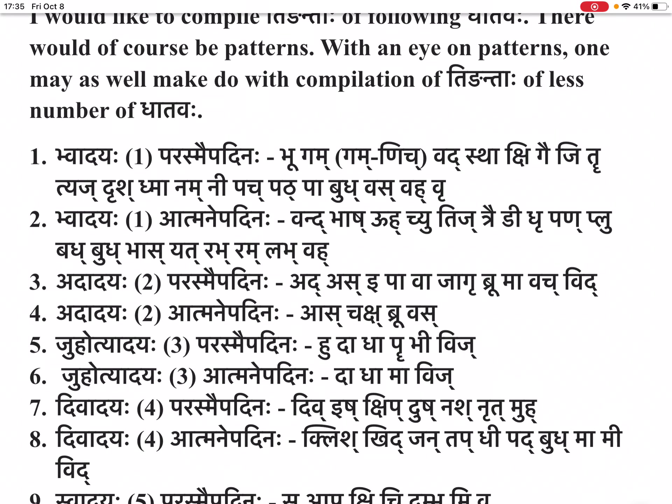So, vhadhayaha — prathamaganiyaha, parasmaipadena: bhu, gam, gam-nich (prayotakam of gam, causative), vad, stha, kshi, gai, ji, dhrush, dhma, nam, ni, pat, pa, budh, vas, vah, vru.